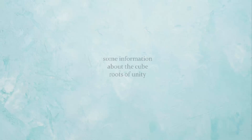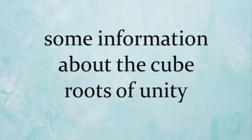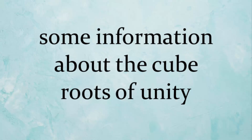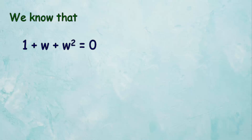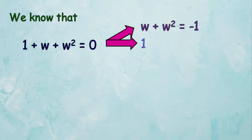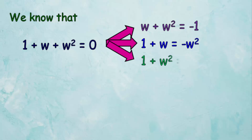Before we start solving this challenge, let's remember some information about the cube roots of unity that helps us. We know that 1 plus omega plus omega squared equals 0, therefore omega plus omega squared equals negative 1. Also, 1 plus omega equals negative omega squared, and 1 plus omega squared equals negative omega.